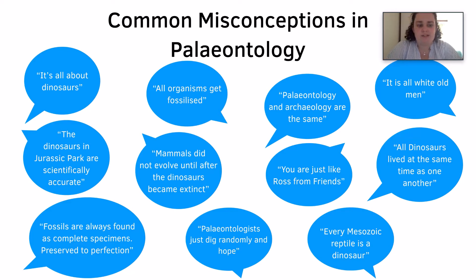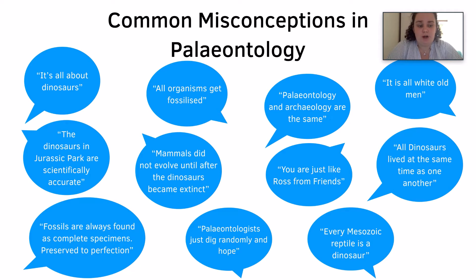All dinosaurs lived at the same time as one another. No — there were three periods within the Mesozoic, and each one has a very specific grouping of dinosaurs. A key example is T-Rex, which lived in the Cretaceous.